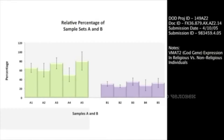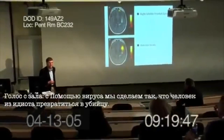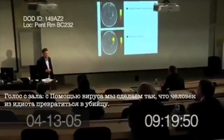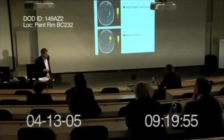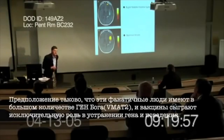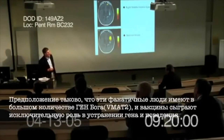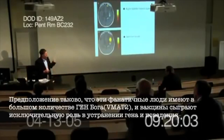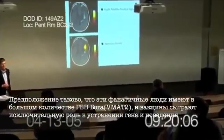What you see here is that by spreading this virus, we're going to eliminate individuals from donning on a bomb vest and going into a market and blowing up the market. So our hypothesis is that these are fanatical people, that they have overexpression of the VMAT2 gene, and that by vaccinating them against this, we'll eliminate this behavior.